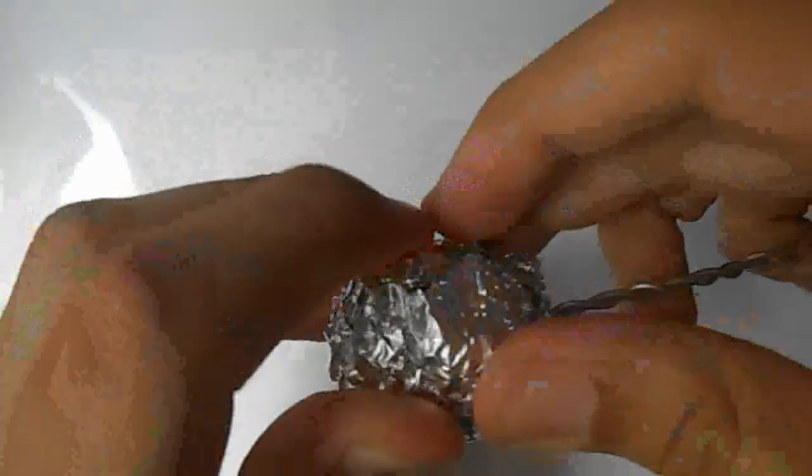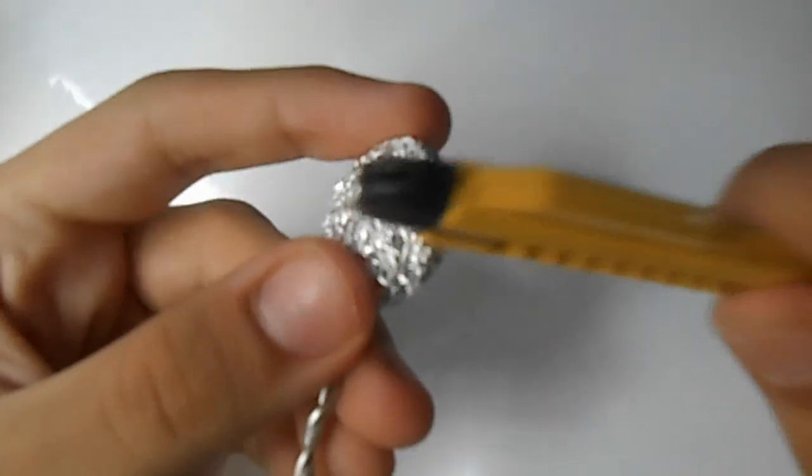Then we are going to create a head from aluminum foil so that it becomes rigid. Smash it, hit it, and squeeze it until it is as hard as a rock.